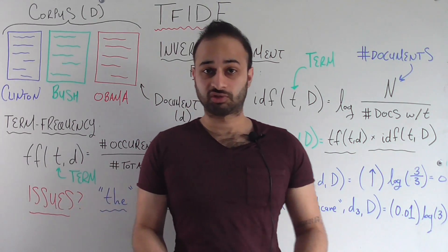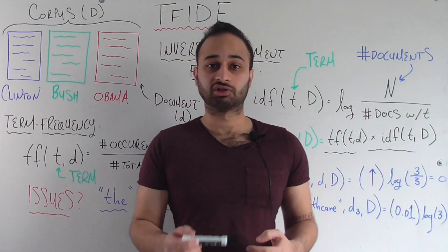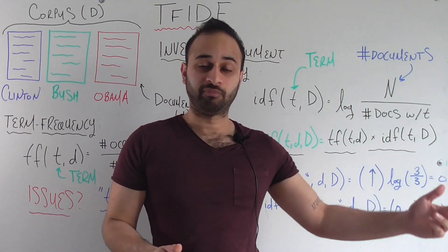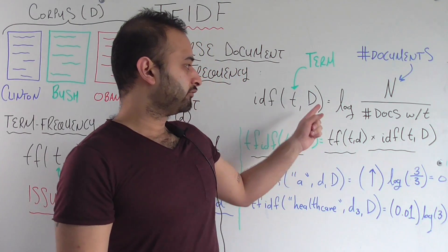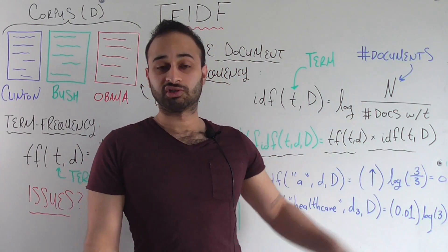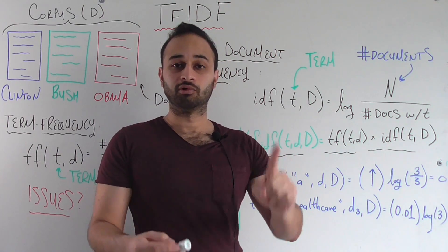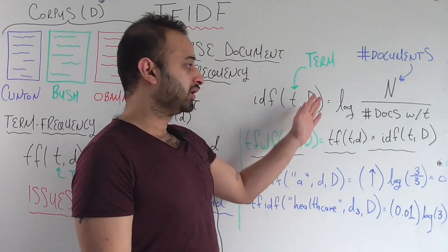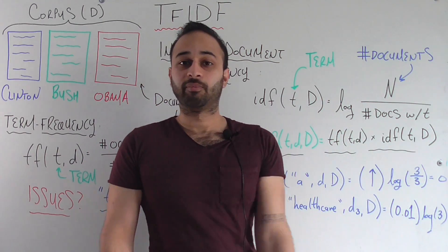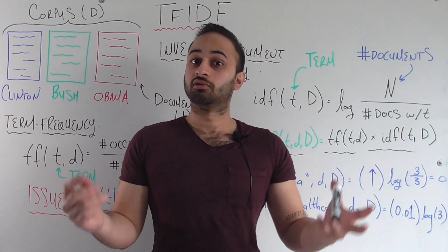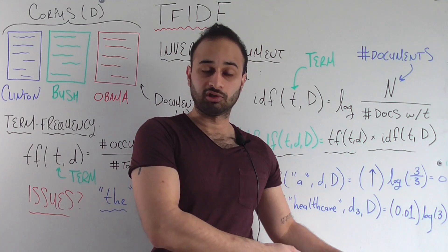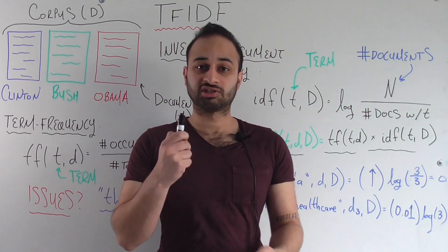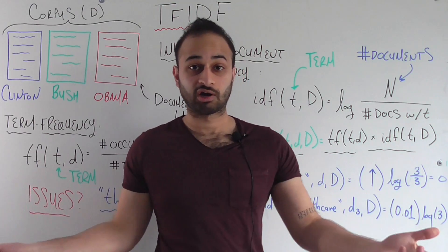Now compare that with the word healthcare. Let's say healthcare does appear in the Obama speech, but does not occur in either of the other speeches. What would the IDF of healthcare be? It would be log of three — the number of documents — divided by one, which is the number of documents that contain the word healthcare. So we get a bigger number for IDF, and that bigger number signals that healthcare occurs in only a few of these documents. Therefore, we give it a bigger weight because it could be more helpful in distinguishing what is different about these documents.